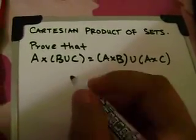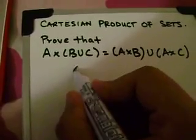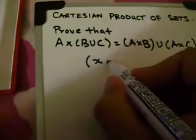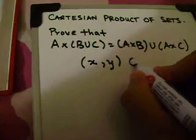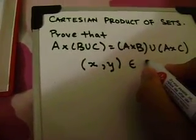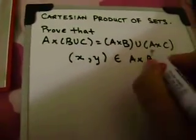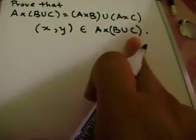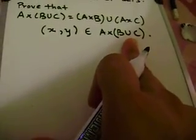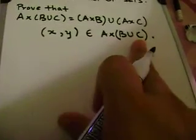So let's start by assuming that the ordered pair X, Y belongs to A cross B union C. We know this is true because A cross B union C is a Cartesian product of two sets. Hence, it's a set that contains all ordered pairs such that X belongs to A and Y belongs to B union C.